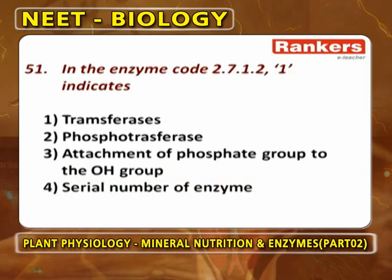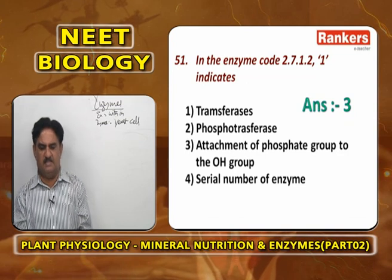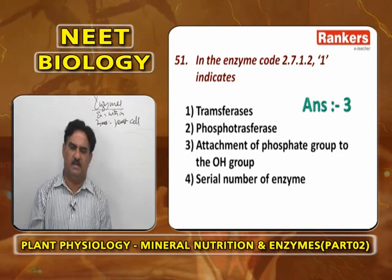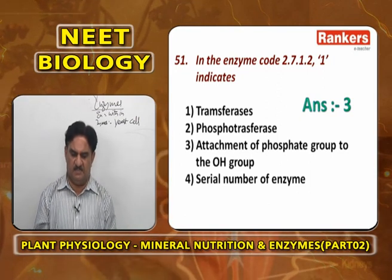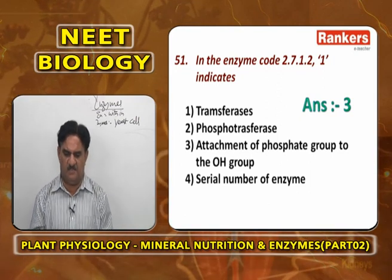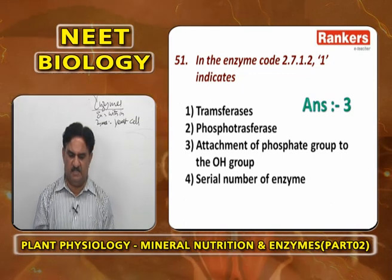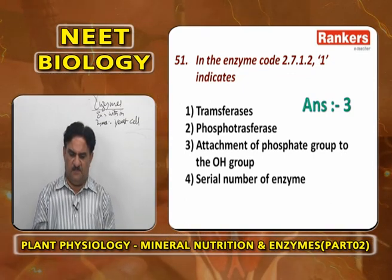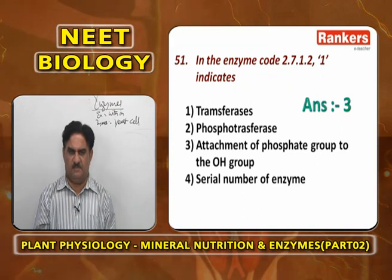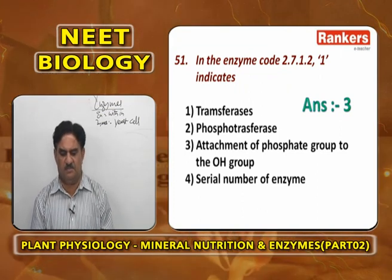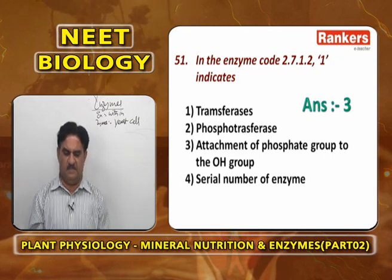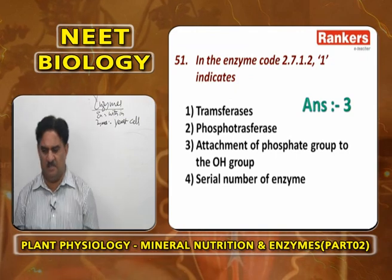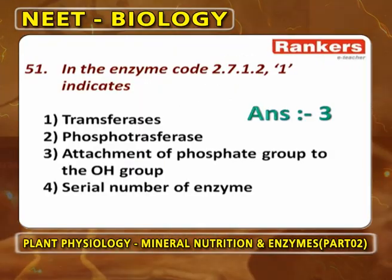In the enzyme code 2.7.1.2, '1' always indicates the sub-subclass. The sub-subclass is not transferases (that is the class) and not phosphotransferases (that is the subclass). It is the attachment of a phosphate group to the OH group. The last digit indicates the serial number.